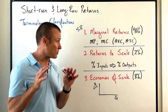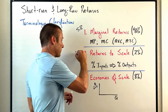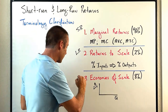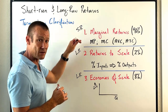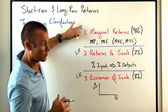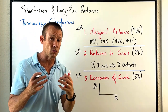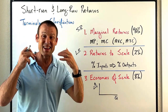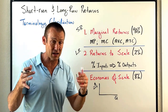Number two: returns to scale. The big thing to understand is that returns to scale is a long-run concept — and economies of scale is also a long run concept. That's such an important difference from marginal returns. In the long run, there are no fixed costs; everything is variable, including facility size.